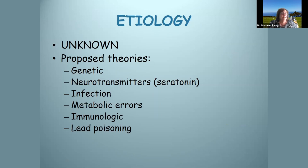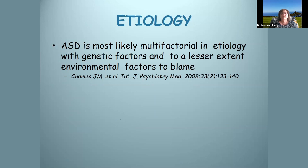What is the etiology of autism? We don't know. I've spent probably the last 20 years being a really avid reader of the literature on autism and what might be causing it. We know there's something genetic. Theories include neurotransmitters, infection, metabolic error, immunologic factors, and lead poisoning. A 2008 paper stated that ASD is likely multifactorial in etiology — genetic factors and, to a lesser extent, environmental factors — though I'm not sure 'lesser extent' is accurate for environmental influences.